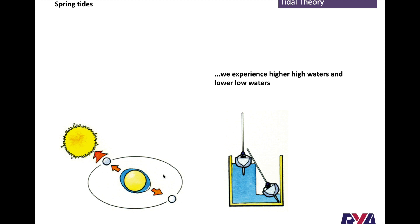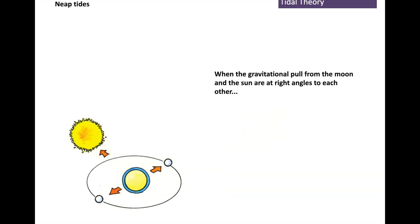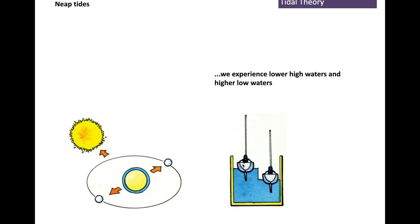On a spring tide we'll get a high high water and a low low water, and the difference between low water and high water — which is called the range — will be the biggest, so a greater range of tide. When they're opposite to each other the bulge will be less and this is called a neap tide, and on this we'll get a low high water and a high low water — a smaller range of tide.